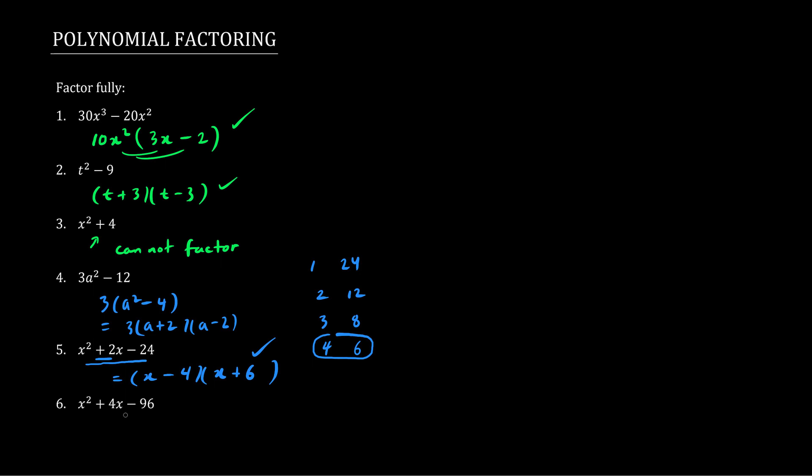And now this one looks a bit more painful, but let's try. So we're trying to find two numbers that multiply to be 96, yet add to be 4.